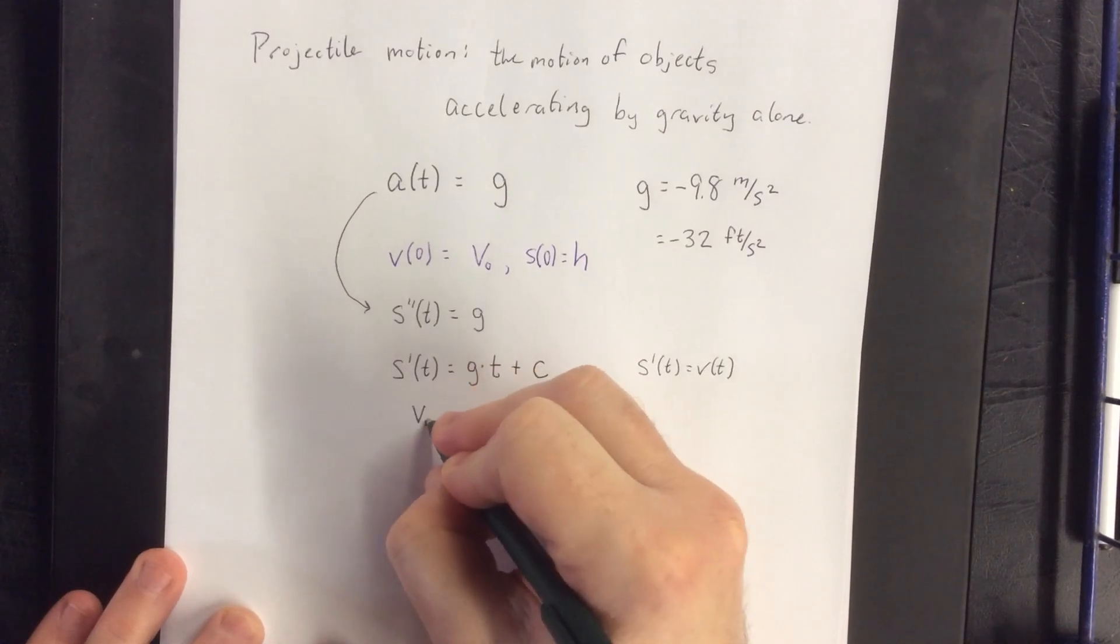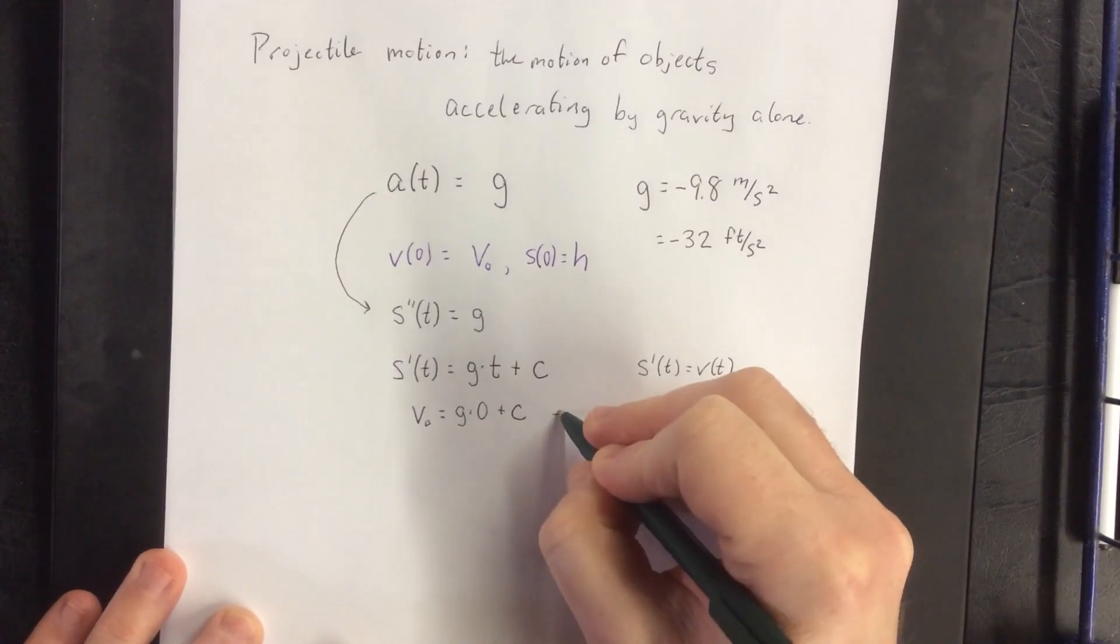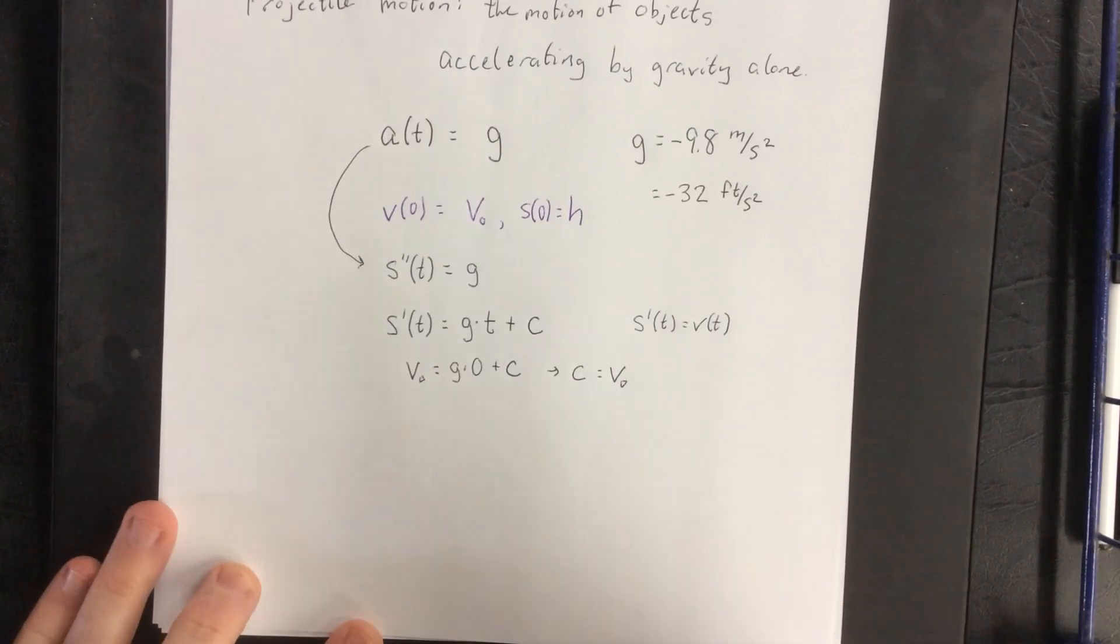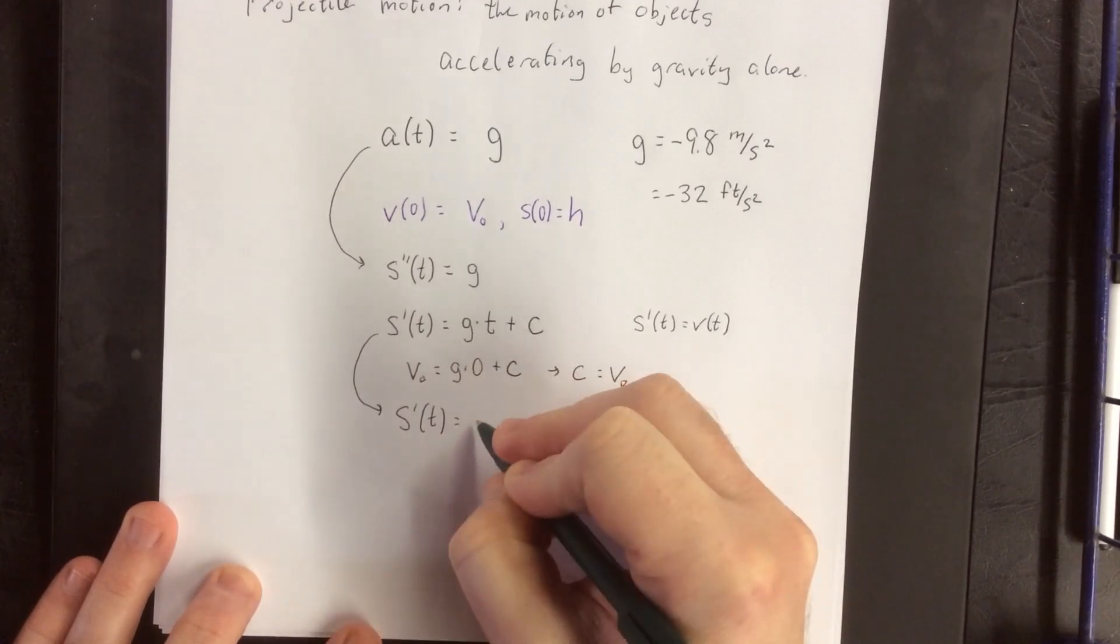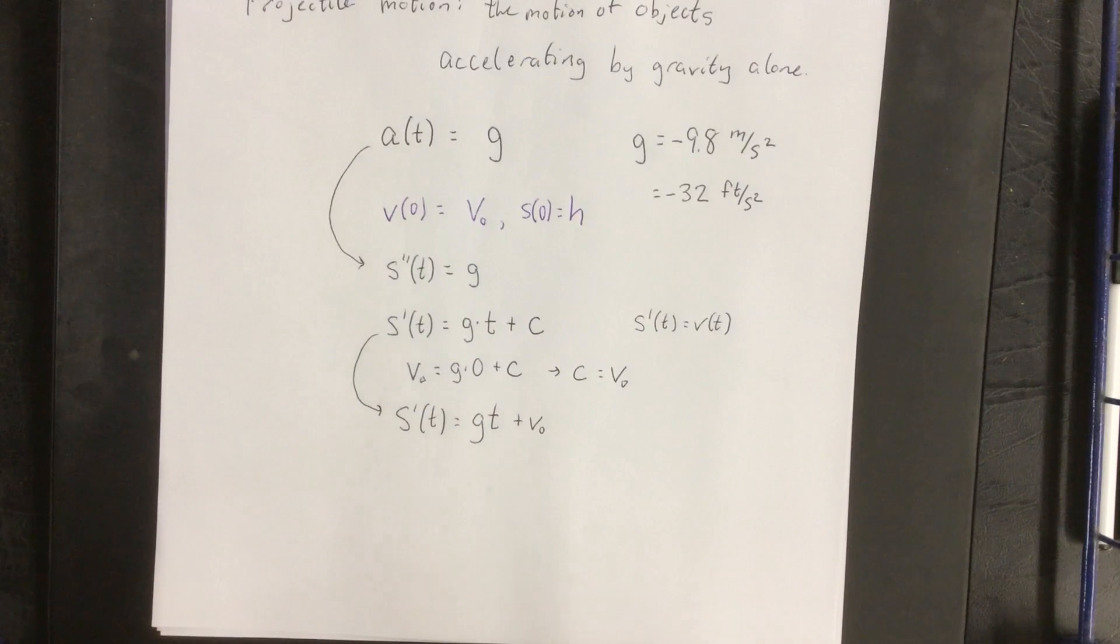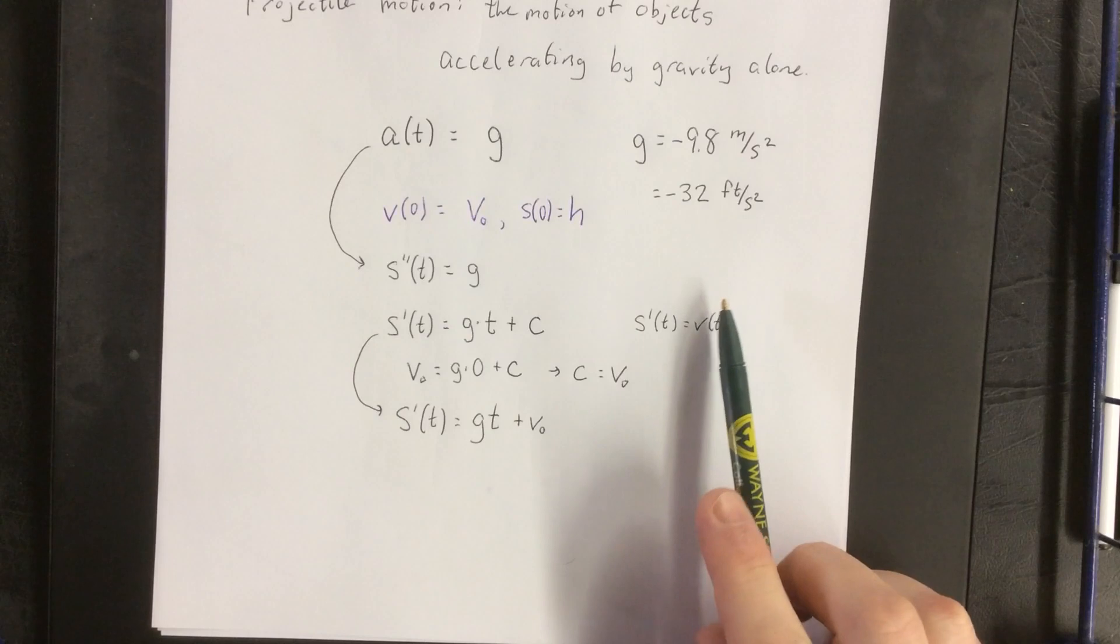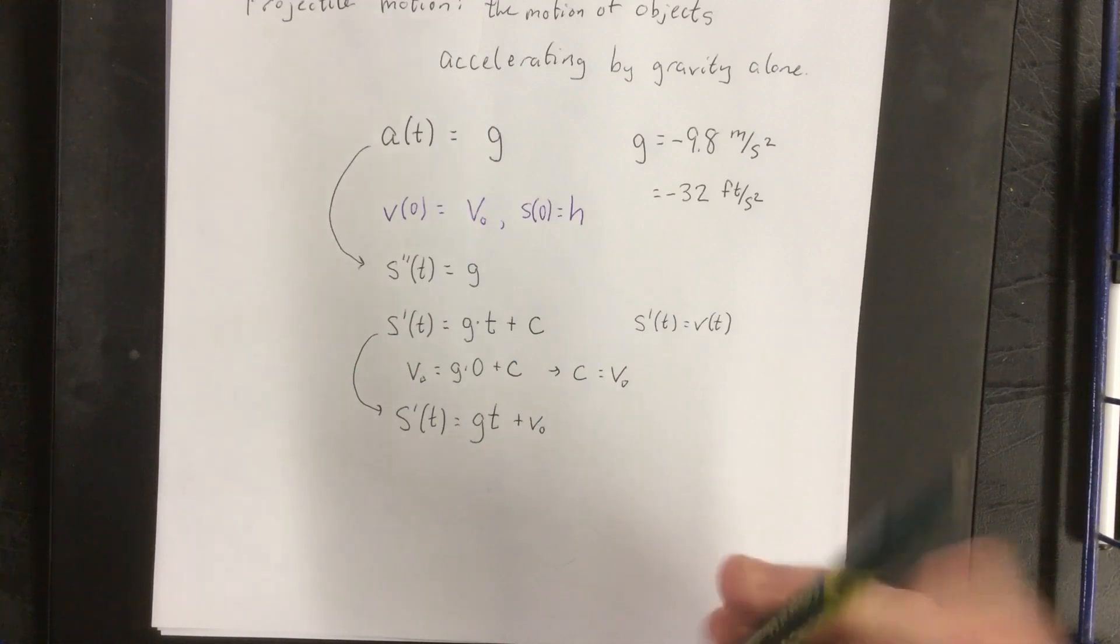So that lets us know that if I plug in t equals 0, I will get v naught, leading us to the fact that that constant of anti-differentiation is v naught. So recopying what our velocity is, this will be acceleration due to gravity times t plus whatever the initial velocity is. Now do keep in mind that velocity is a vector quantity, therefore it has a direction associated with it. Because we've defined acceleration due to gravity to be negative, we'll assume that the negative direction means downward and the positive direction means upward.